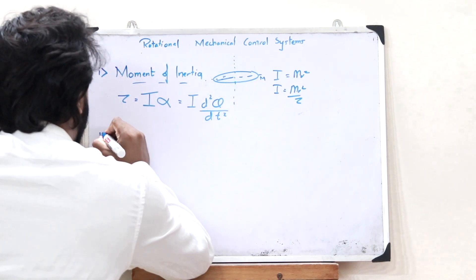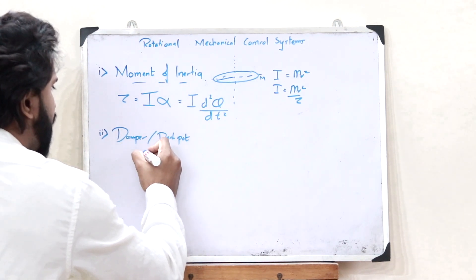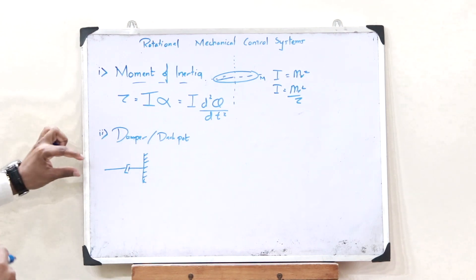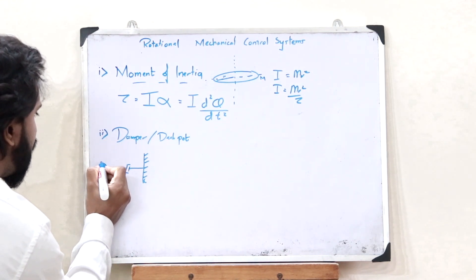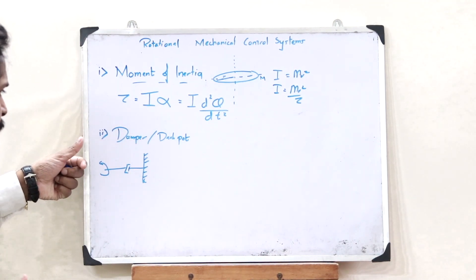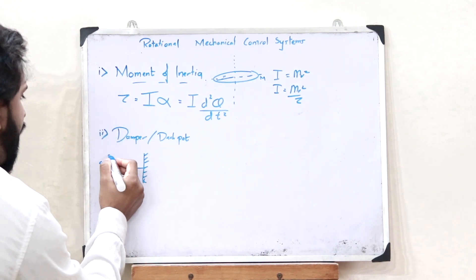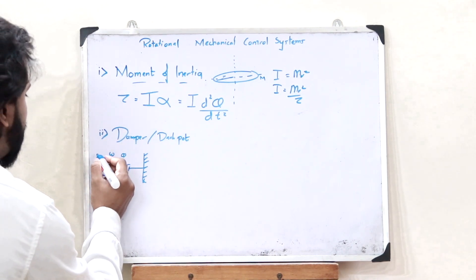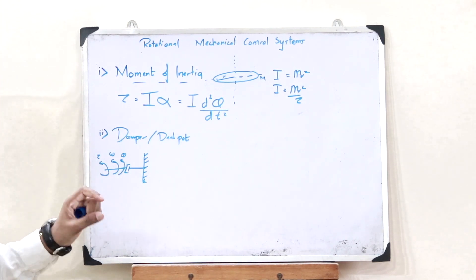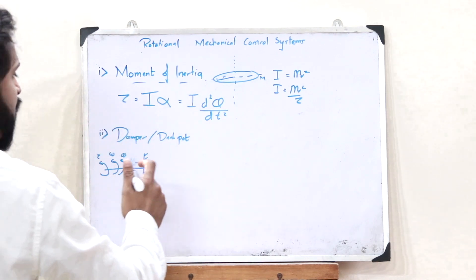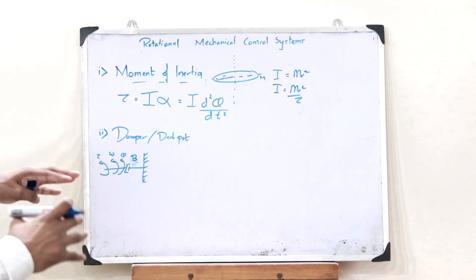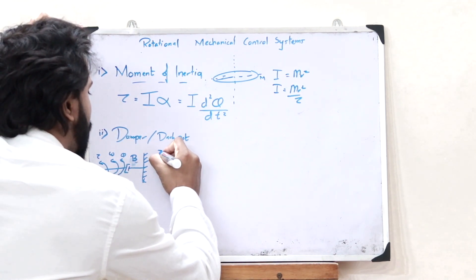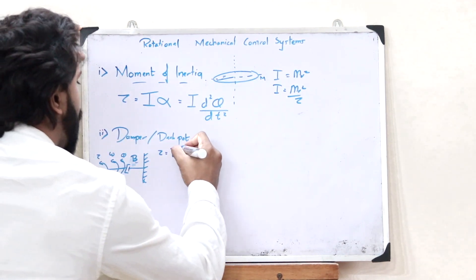Now let us look at a particular damper or dashpot. Here, assume we have a particular wall with a damper connected to it. Now assume a rotating torque applied in a particular direction. When this rotating torque is applied, the system rotates with angular velocity ω, undergoing angular displacement θ, and the restoring torque τ is developed. Let the damping constant of this damper be B. The restoring torque produced in this damper is given as τ = B · ω.